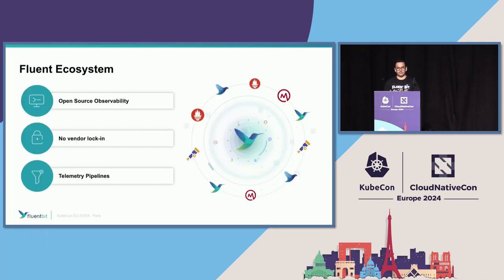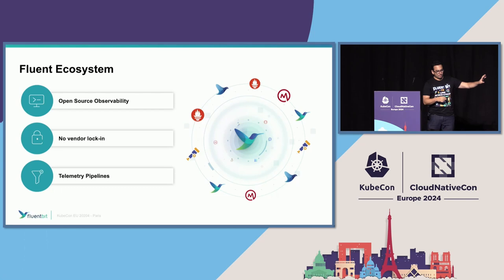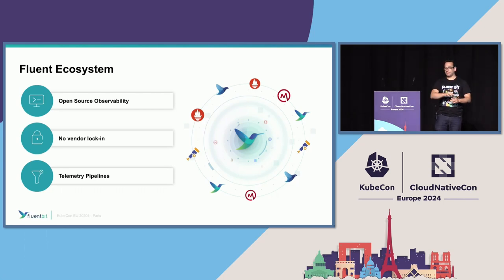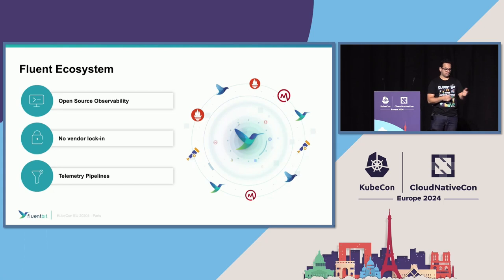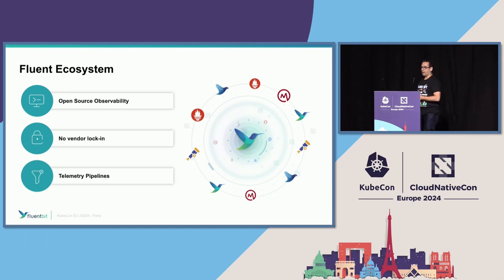The Fluent ecosystem doesn't try to be a drop-in replacement. In reality and in production environments, you don't have just one type of application to replace. In our observability space, you have logs, metrics, and traces, plus syslog, plus messages from systemd, plus more — and you need a unified way to collect this information because your goal is data analysis. If you can't have something plug-and-play to receive this information, it will be a mess.